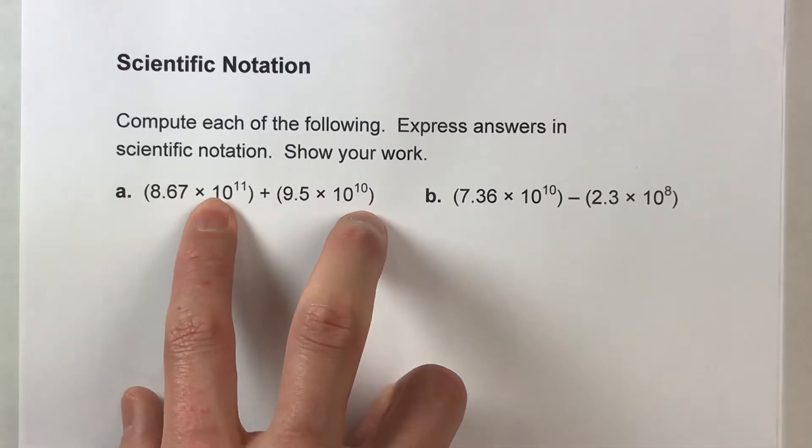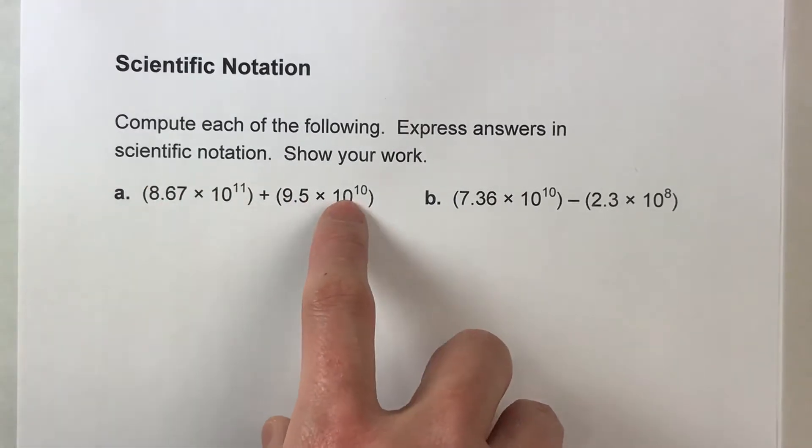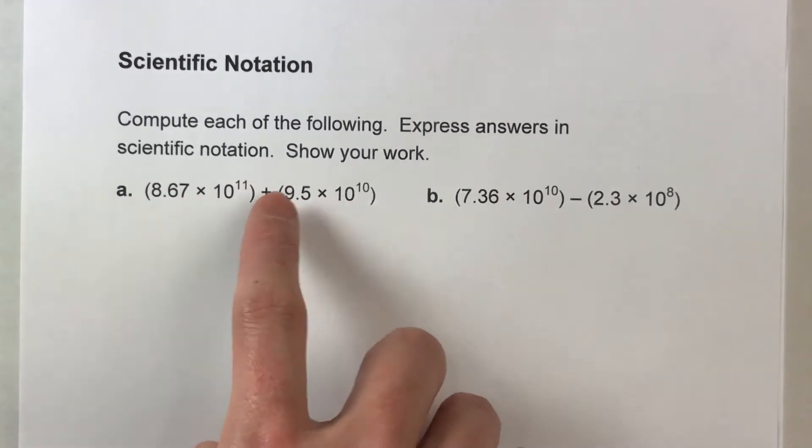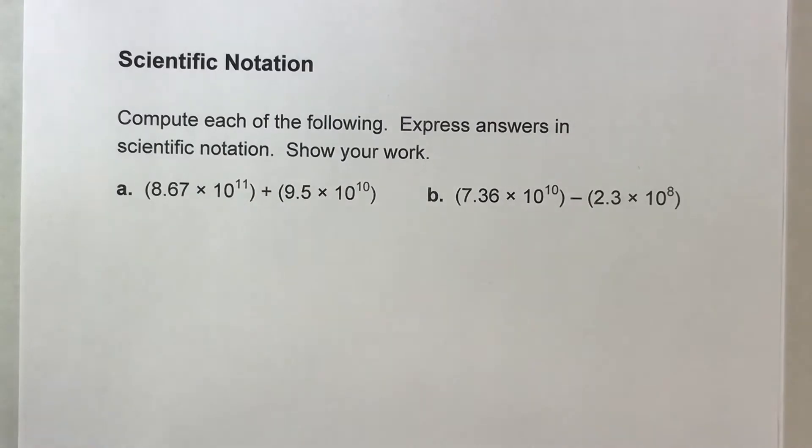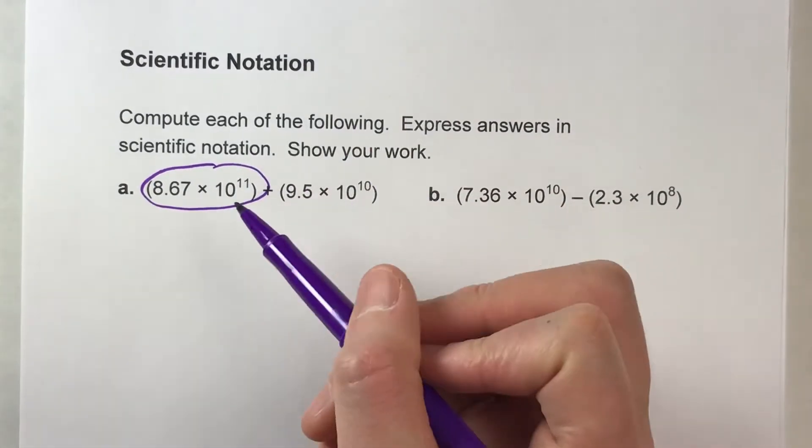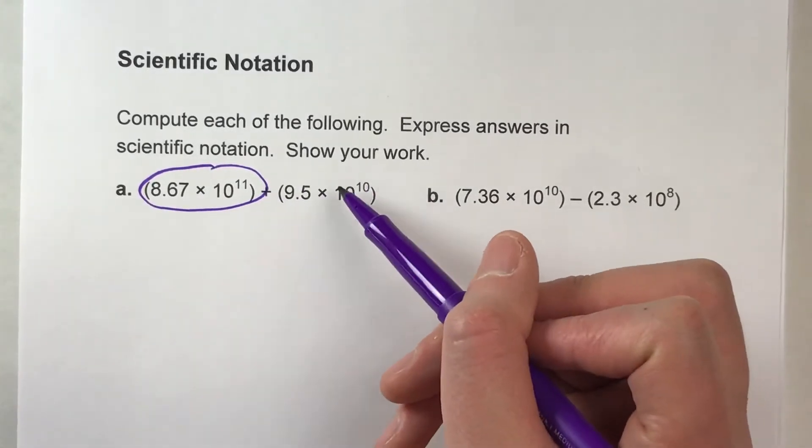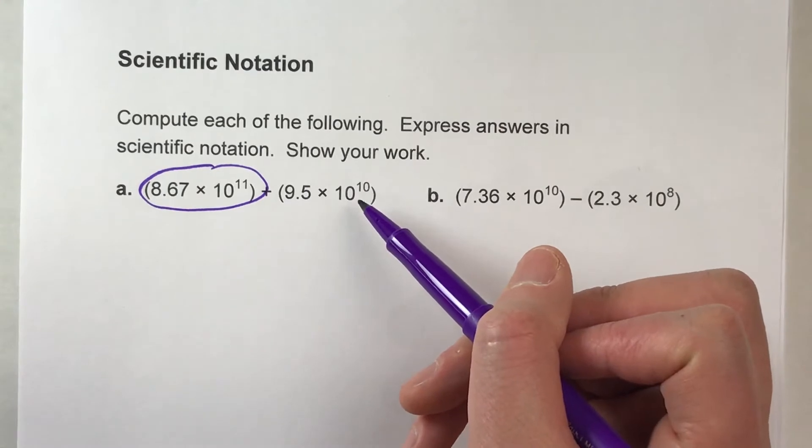In order for me to add these two together, what I'm going to have to do is I'm going to just have to change one of these so that the power of 10 matches the other one. And the way I'm going to do it is I'm going to take the bigger one. I'm going to take this one, 8.67 times 10 to the 11th power, and I'm going to adjust this so it's going to be times 10 to the 10th power instead.